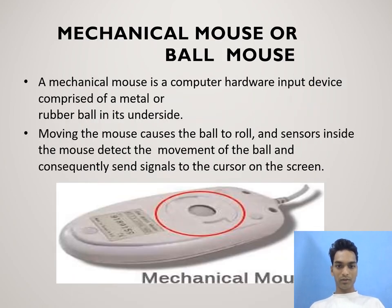Mechanical mouse, or ball mouse: a mechanical mouse is a computer hardware input device comprised of a metal or rubber ball on its underside. Moving the mouse causes the ball to roll, and sensors inside the mouse detect the movement of the ball and consecutively send signals to the cursor on the screen.